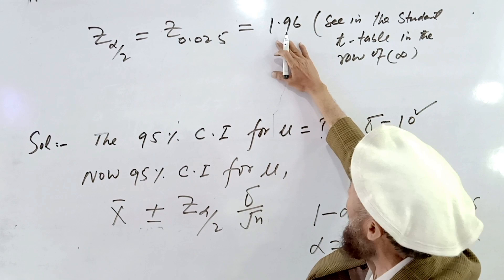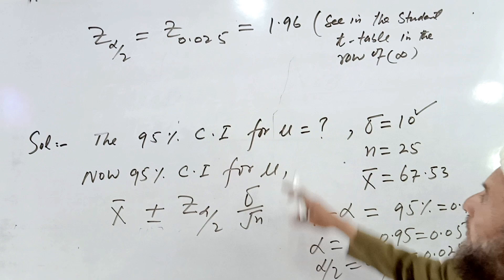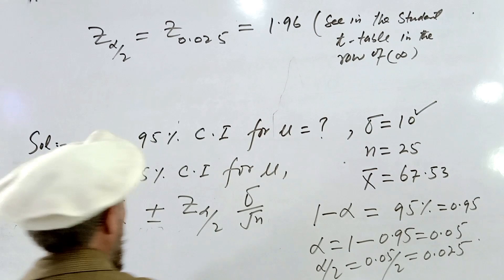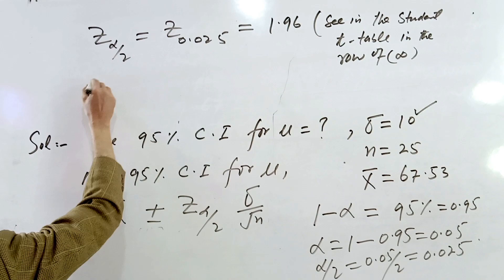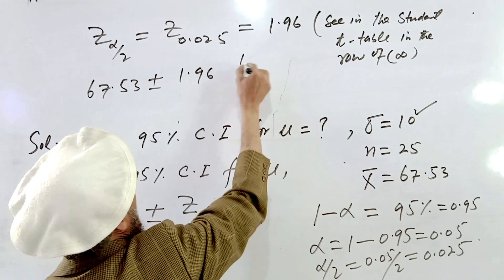The value is 1.96. This is the Z value for 0.025, because when the t-distribution degrees of freedom approach infinity, it converges to the Z distribution. So we put the values into the formula: X-bar is 67.53 plus or minus 1.96, sigma is known, divided by the square root of n.